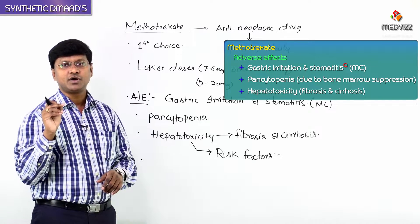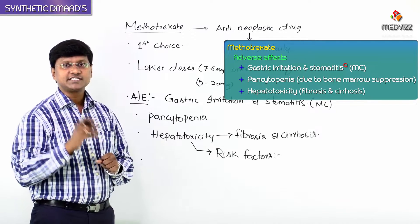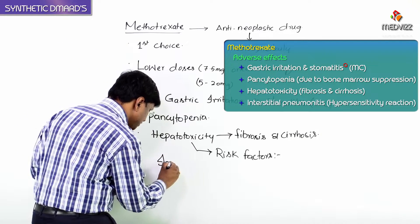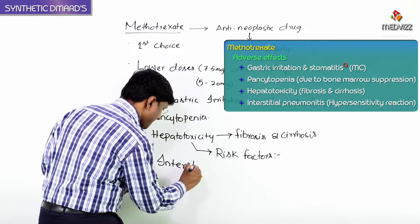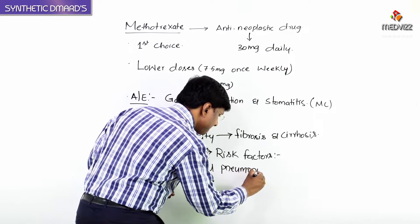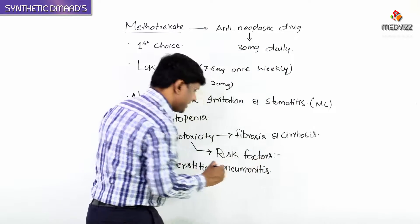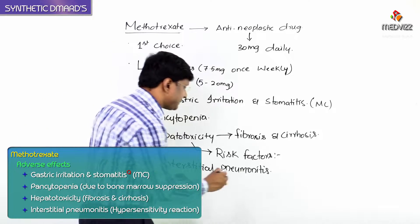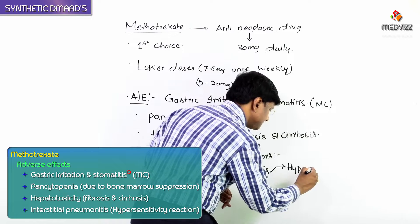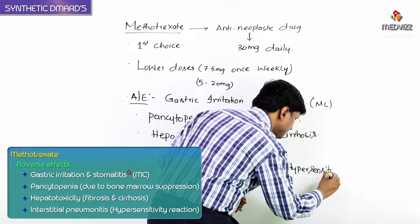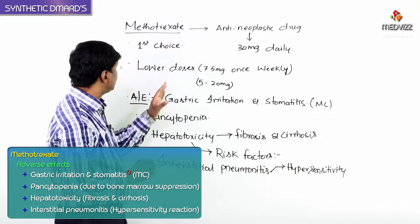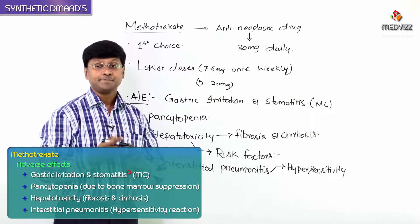Another important adverse effect is that methotrexate causes a hypersensitivity reaction. That particular hypersensitivity reaction is interstitial pneumonitis, which is the hypersensitivity reaction seen in patients taking methotrexate.